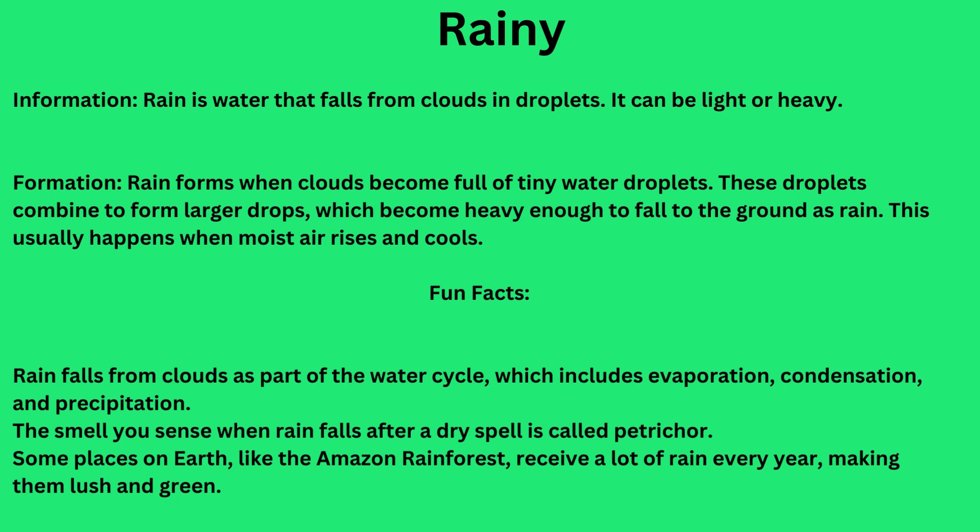Fun facts about rainy weather: Rain falls from clouds as part of the water cycle, which includes evaporation, condensation, and precipitation. The smell you sense when rain falls after a dry spell is called petrichor. Some places on Earth, like the Amazon rainforest, receive a lot of rain every year, making them lush and green.